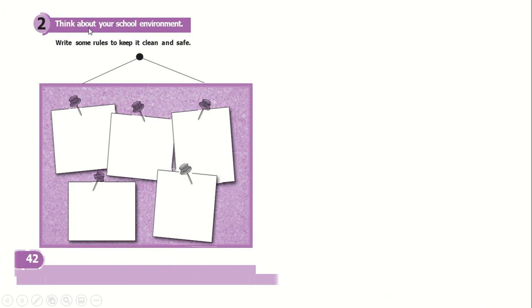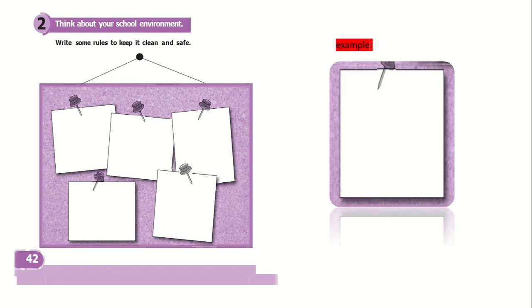Now think about your school environment. I want you to write some rules to keep it clean and safe. How can we keep our classroom safe and clean? What can we write for those people who may destroy our classroom or school? Think of the furniture — the chairs, the table, the wall — everything in the school. How can we make it safe and protect it?